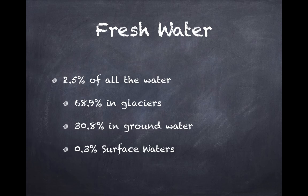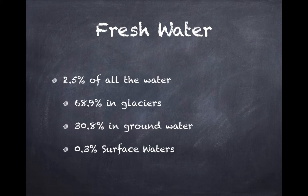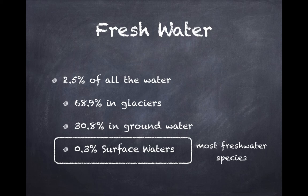Only about two and a half percent of all the water on the planet is freshwater — it's almost all marine or transitional. Of that two and a half percent, almost seventy percent is in glaciers, another thirty percent is in groundwater, and lakes, streams, and ponds make up about 0.3% of all the freshwater on the planet. Within that 0.3%, almost all freshwater species, particularly large animals, are found.